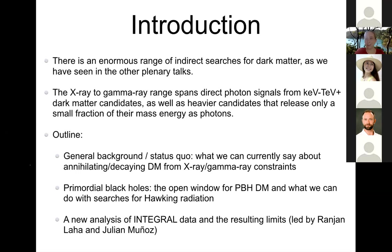I want to change direction a bit, and since this is the last talk of IDM, just talk about something fun: what you can do with the same X-ray and gamma ray constraints to constrain a very specific kind of decaying dark matter, which is primordial black holes. This is based on recent work led by Rajan Laha and Julian Munoz, who are both fantastic. The second part of my talk will be about what is the currently open window for primordial black hole dark matter.